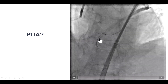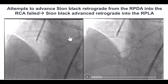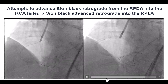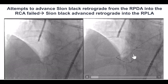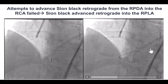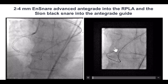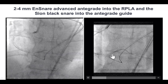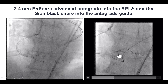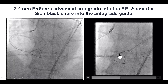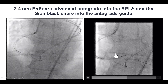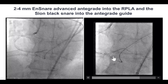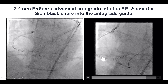Regarding the posterior descending artery — we wanted to dilate it, but had a similar issue and could not advance an antegrade wire into the PDA. We advanced a retrograde guide wire, but it went into the posterolateral instead of going retrograde into the RCA. After multiple attempts, we used a trick: we advanced a micro snare antegrade into the posterolateral, advanced the retrograde guide wire through the micro snare, then pulled the micro snare back. By doing that, we were able to pull the retrograde guide wire back into the distal right coronary artery. This is an example where using a snare can help advance a wire retrogradely into the distal RCA.